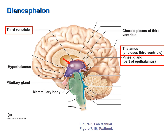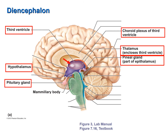The ceiling of the third ventricle is the epithalamus, which consists of the pineal gland and the choroid plexus. The choroid plexus is a mass of capillaries responsible for the production of cerebrospinal fluid. The floor of the third ventricle is the hypothalamus — hypo meaning below, below the thalamus. Attached to the hypothalamus are the pituitary body and the mammillary body.